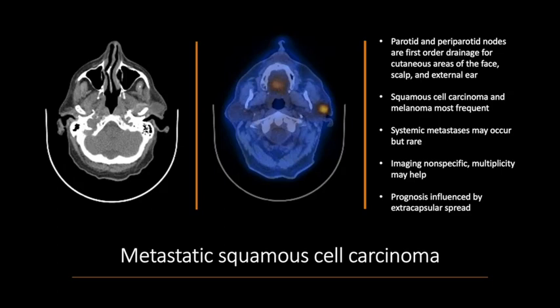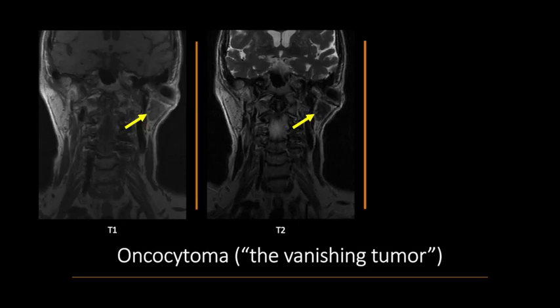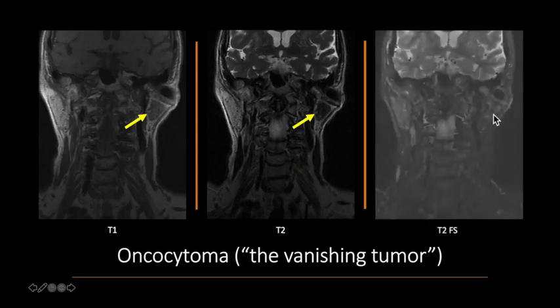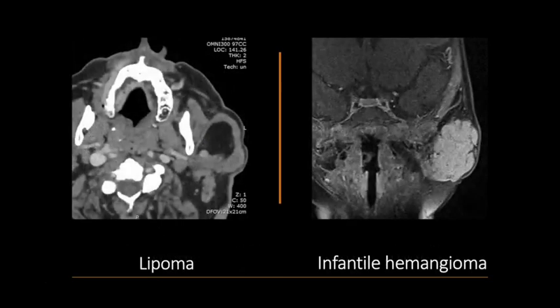Imaging of parotid metastases is nonspecific, but multiple parotid masses in a patient with known cutaneous head and neck malignancy are suggestive. Oncocytomas are uncommon benign tumors known as the 'vanishing parotid tumor' because they become isointense to the parotid on T2 fat-saturated imaging. Salivary gland lipomas are characterized by their fat density; any nodular soft tissue component must be followed to exclude liposarcoma. In children in the first decade of life, mesenchymal tumors and vascular lesions are more common than epithelial tumors, with hemangiomas being most common — T2 hyperintense, avidly enhancing masses with internal flow voids.